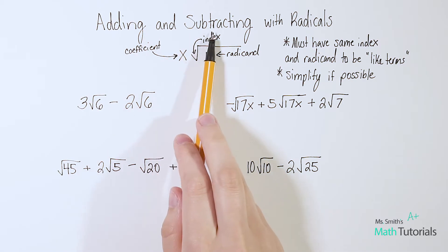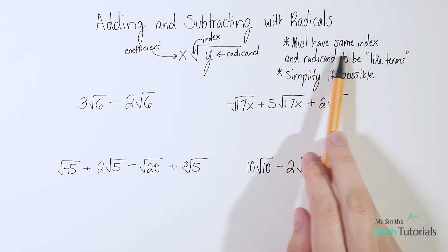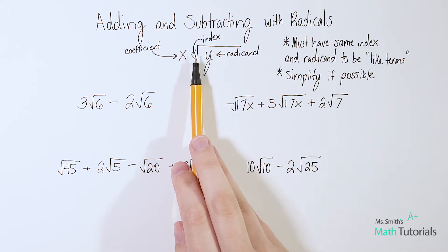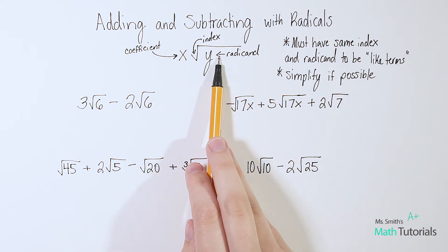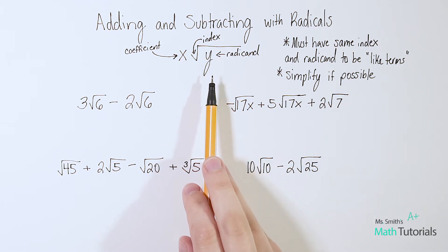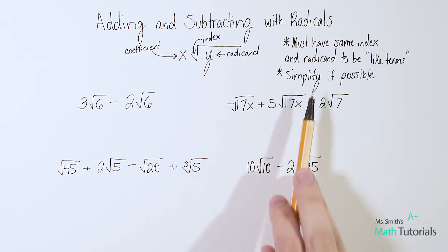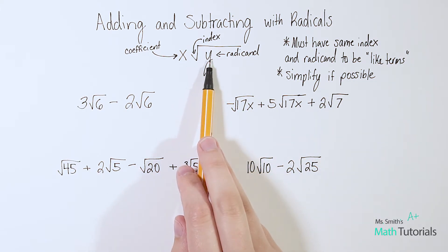So in order to add or subtract with radicals, they must have the same index and the same radicand in order to be like terms. So we're used to saying if you have an x squared, in order to have a like term, you'd have to have another x squared. Radicals work the same way. It has to be the same index and the same number or number letter combination underneath the radical.